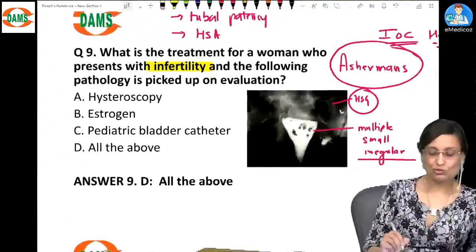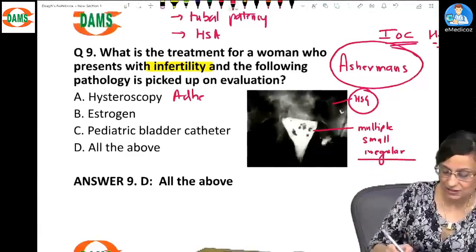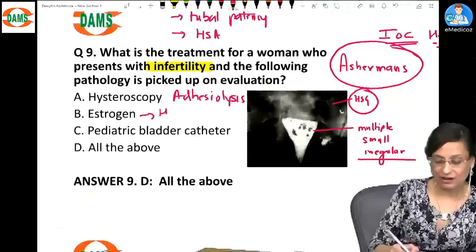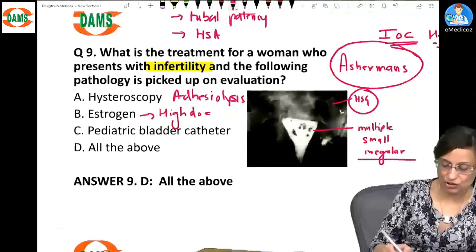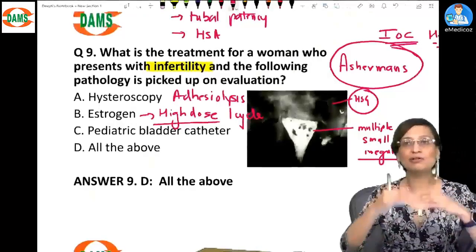So on hysteroscopy we will break the adhesions. So we will do an adhesiolysis. Then we are going to give high dose estrogen for one cycle so that there is a build up of endometrium.